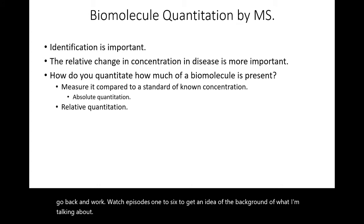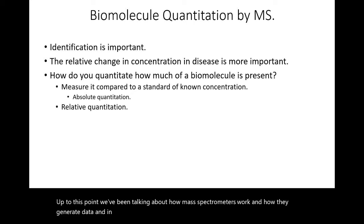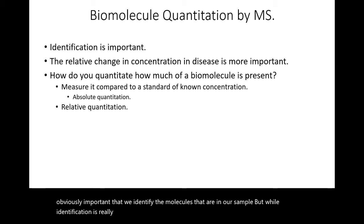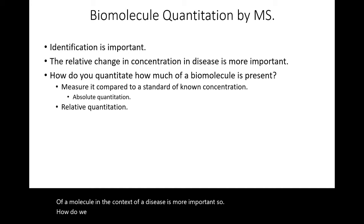Up to this point we've been talking about how mass spectrometers work and how they generate data. In the last episode we touched on briefly how identification works, and it's obviously important that we identify the molecules in our sample. But while identification is really important, the relative change in the concentration of a molecule in the context of a disease is more important. So how do we quantitate how much of a biomolecule is present using mass spectrometry?